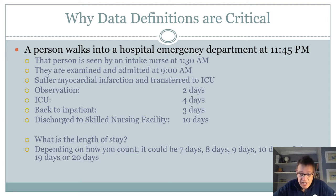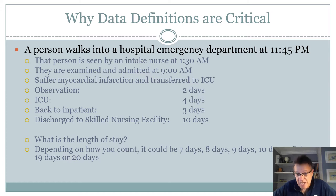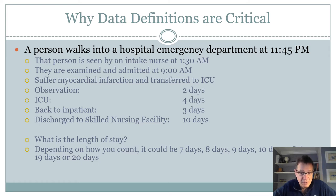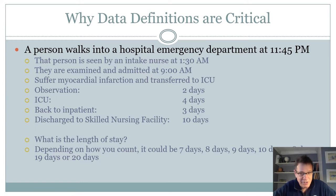Here's a healthcare example of why a data definition is critical. Say a person walks into a hospital emergency department at 11:45 PM, sits in the waiting room, and is not seen until 1:30 AM — the following day. They are examined and admitted at 9 AM, placed in an observation unit, then suffer a myocardial infarction and are transferred to the ICU. They spend two days in observation, four days in the ICU, three days in a standard inpatient bed, and are discharged to a skilled nursing facility for 10 days. What's the length of stay? Depending on how you count, it could be seven, eight, nine, ten, eighteen, nineteen, or twenty days.